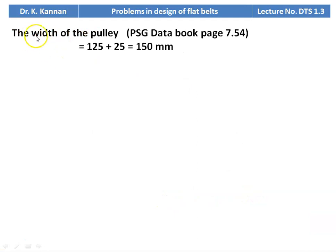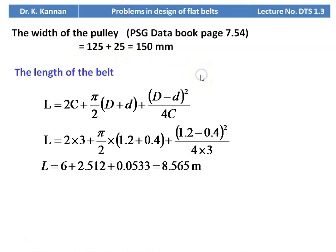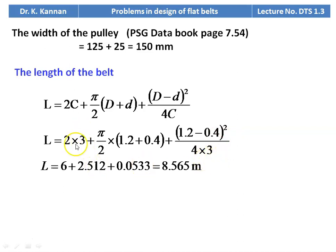Width of the pulley from page 7.54: pulley width should be 25 mm more than the belt width = 125 + 25 = 150 mm. Length of the belt for open belt drive: L = 2C + (π/2)(D + d) + (D − d)² / (4C) = 2×3 + (π/2)(1.2 + 0.4) + (1.2 − 0.4)² / (4×3) = 8.565 meters.